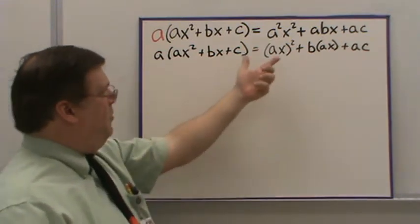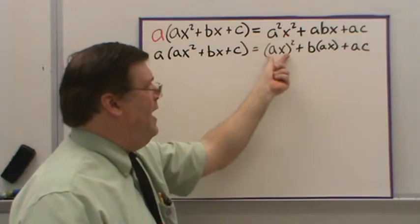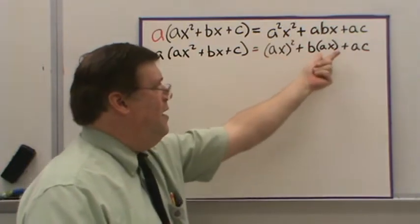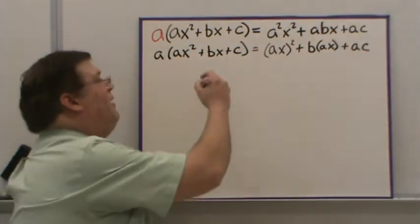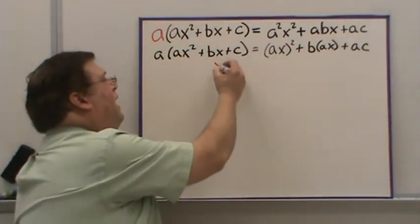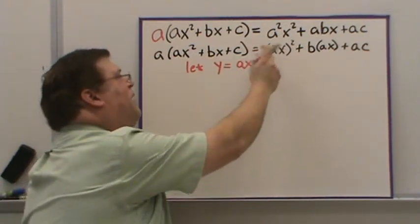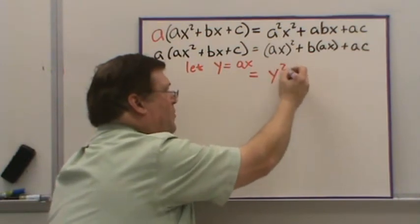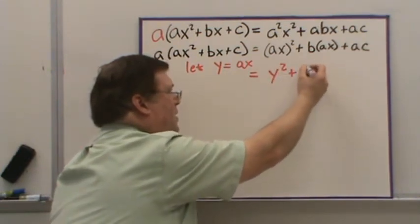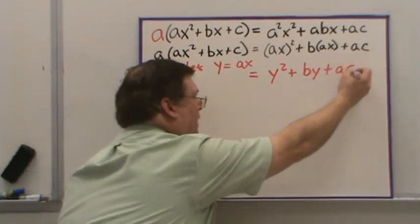Then I would combine my AX terms here. So I have AX squared and AX times B. I'm temporarily going to replace the AX. I'm going to let Y equal AX and replace it in there so that I now have Y squared plus BY plus AC.